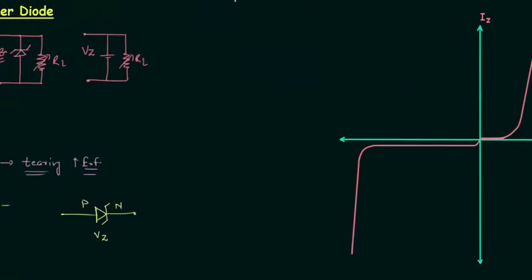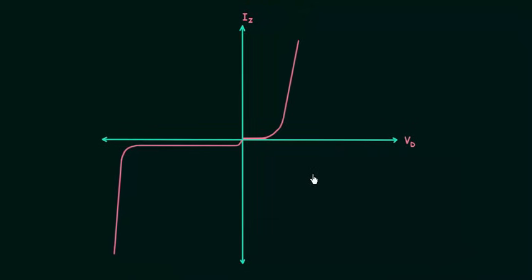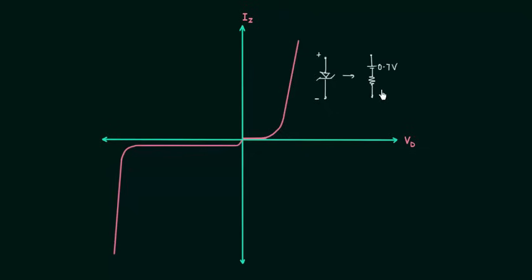Now I will try to obtain the equivalent models for Zener diode using the VI characteristics. This is the forward bias region and this is the reverse bias region. In the forward bias region, the Zener diode is similar to the normal diode. I will connect the P side to the positive terminal and the N side to the negative terminal. The Zener diode is forward biased and I can replace this symbol by the barrier potential — 0.7 volts for silicon — and the diode resistance RZ. If we consider RZ to be very small, we have a simple equivalent model for the forward bias region.